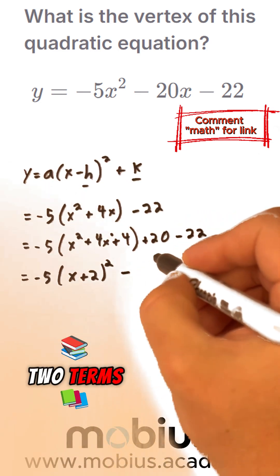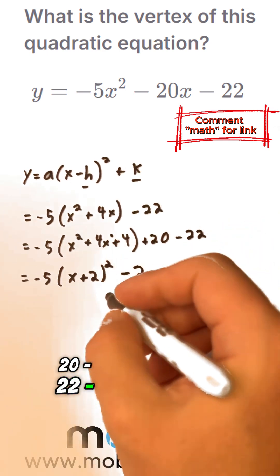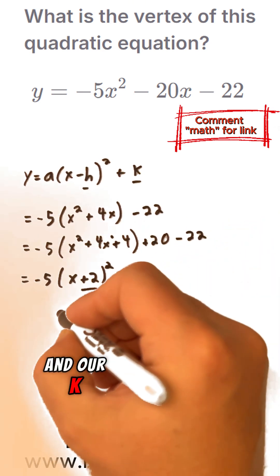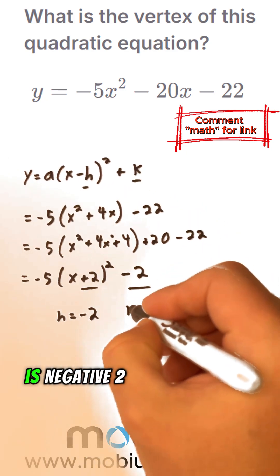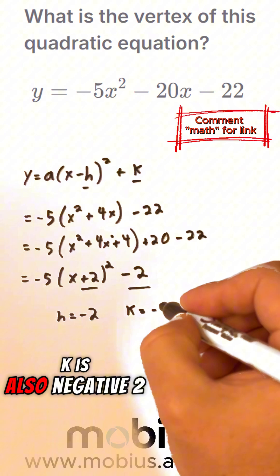Combine these two terms, 20 minus 22, minus 2. So now we've got our h and our k. h is a negative, so h is negative 2. k is also negative 2.